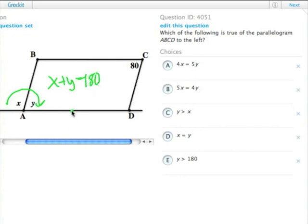We also know from the property of parallelograms, opposite angles are equal. So angle y here is also equal to angle BCD, which is 80. So x plus 80 equals 180, which means that x equals 100 and y equals 80.